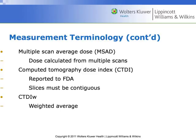Federal and state governments are increasingly requiring reporting of CTDI or DLP numbers at the end of the scan. CTDI accounts for the dose over a distance, and CTDI-W is a weighted average over that distance.